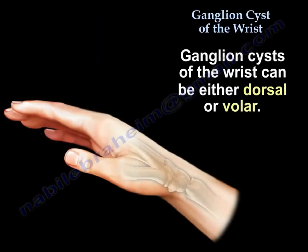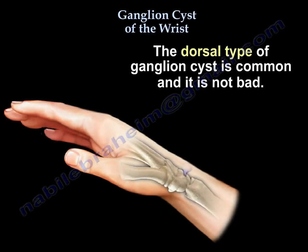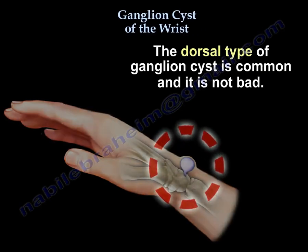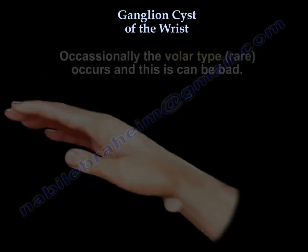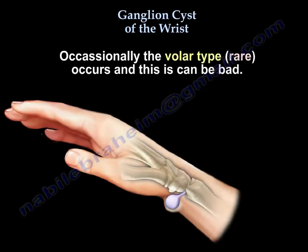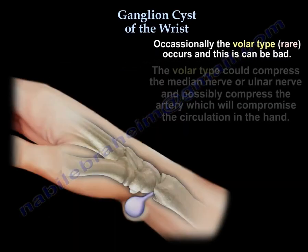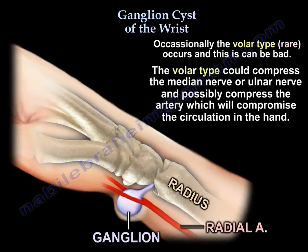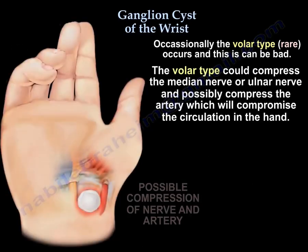There are two types: a dorsal type and a volar type. The dorsal type is common and it is not bad. The occasional volar type is rare and can be bad, because it can compress the median nerve, the ulnar nerve, or it can compress the artery and compromise the circulation in the hand.